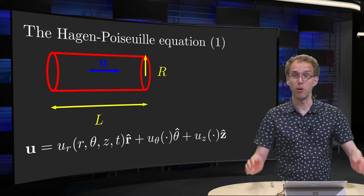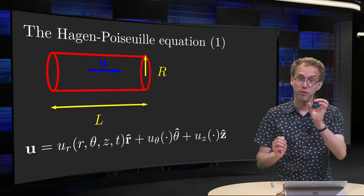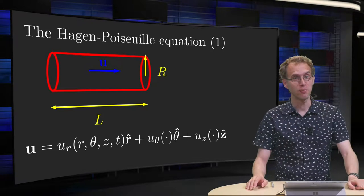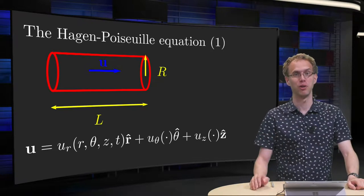More water flows through a big tube than through a small tube. That is obvious, but how much more?